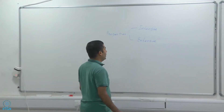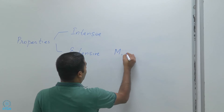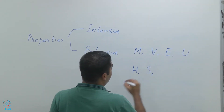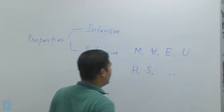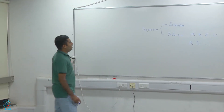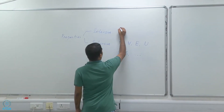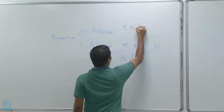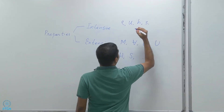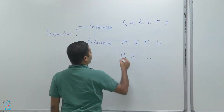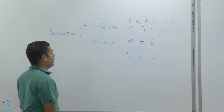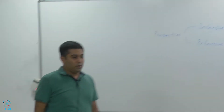Some examples of extensive properties are mass, volume, energy, internal energy, enthalpy, entropy, and so on — many macroscopic extensive properties. Those that are not extensive are intensive, such as density (rho), specific internal energy, specific enthalpy, specific entropy, temperature, pressure, specific heat at constant volume, and specific heat at constant pressure — all of these are intensive properties.